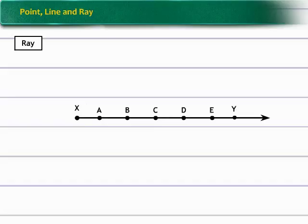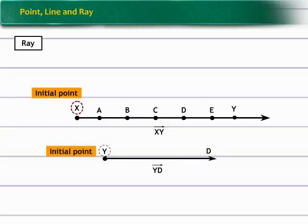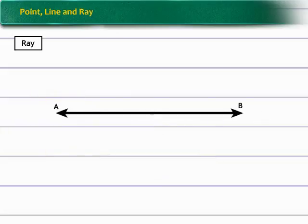It is denoted by ray AB. In this figure, there are infinitely many points A, B, C, D, E on ray XY. Now in ray XY, X is initial point. For ray YD, Y is initial point. Now in line AB, here point X lies between A and B and ray XA and ray XB are parts of line AB. That is, ray is a part of a line.